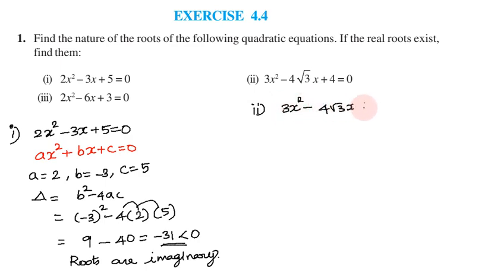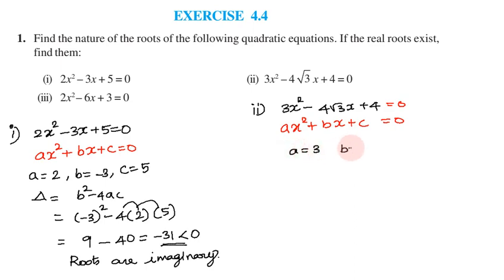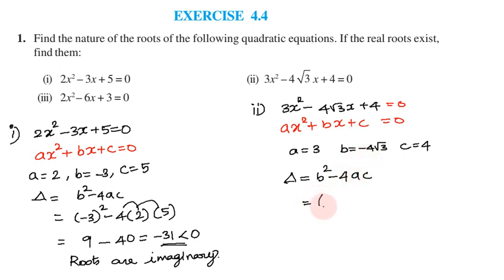Next equation: 3x² - 4√3x + 4 = 0. Comparing with ax² + bx + c = 0, we get a = 3, b = -4√3, c = 4. Finding the discriminant: Δ = b² - 4ac = (-4√3)² - 4 × 3 × 4.